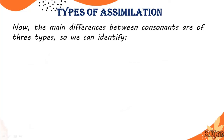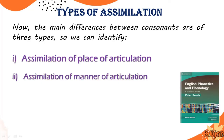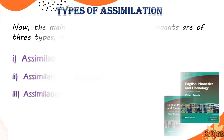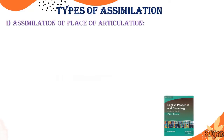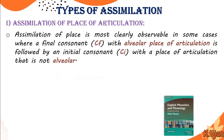Now let's talk about types of assimilation. The main differences between consonants are of three types: number one, assimilation of place of articulation; number two, assimilation of manner of articulation; and number three, assimilation of voicing. Assimilation of place is most clearly observable where a final consonant (cf) with an alveolar place of articulation is followed by an initial consonant (ci) with a non-alveolar place of articulation.